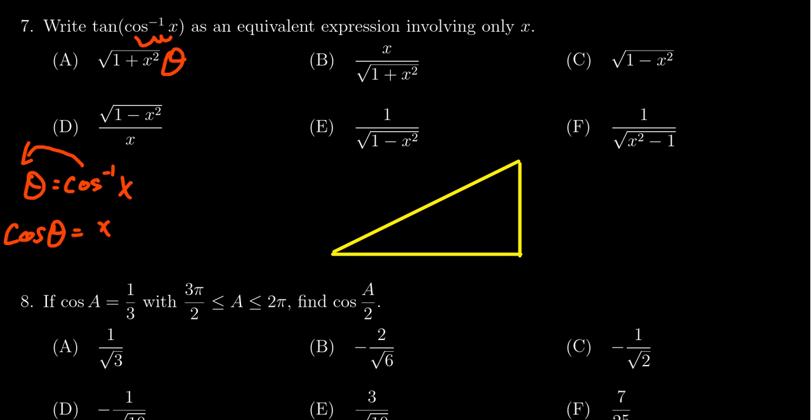We like to think of trig functions giving us a ratio, so we'll think of this as x over one. And so with associated angle theta, this right triangle has as its adjacent side x and as its hypotenuse one.